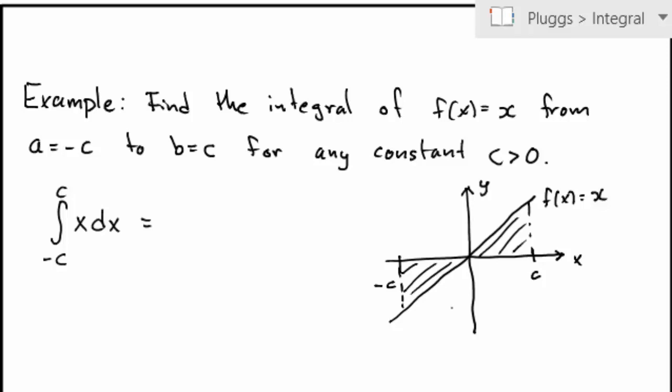In this case, it's clear that these areas must be exactly the same. We have the same base and the same height. And remembering that whenever the function is positive, we add to the area, and whenever the function is negative, we subtract from the area, we realize that this integral must be zero.